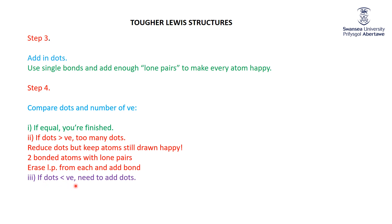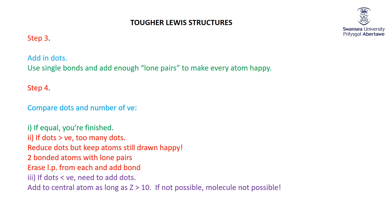Occasionally — and this is much rarer — you won't have enough dots: the number of dots is less than the number of valence electrons. Here we need to add dots. If you can, you add those extra dots to the central atom, as long as its atomic number is bigger than 10 — as long as it is in the third shell or higher. If you don't have a central atom in the third shell or higher, the molecule is not possible.